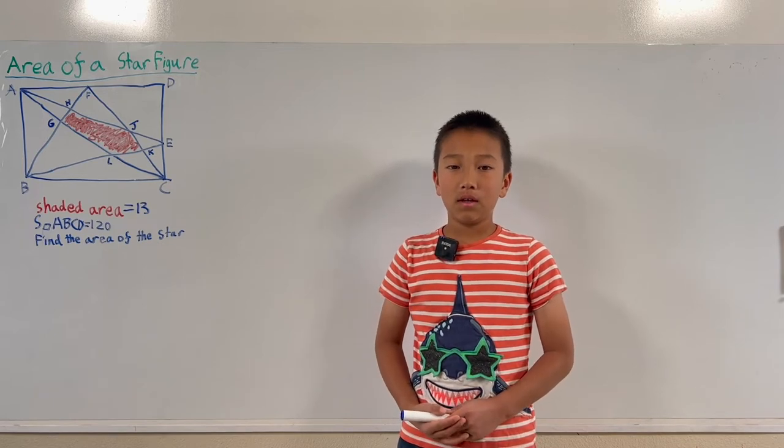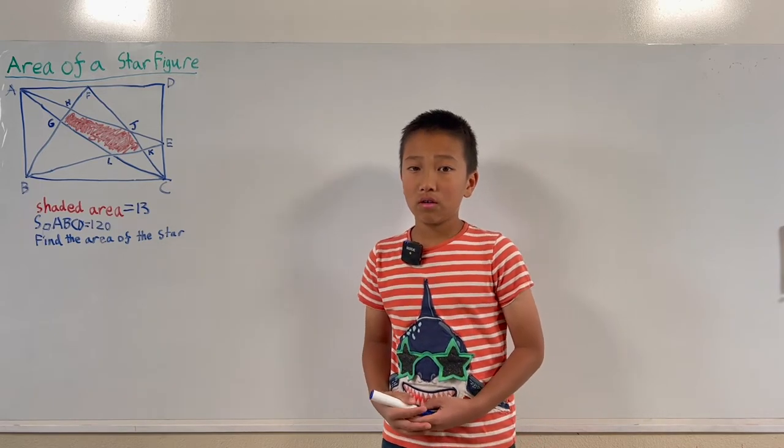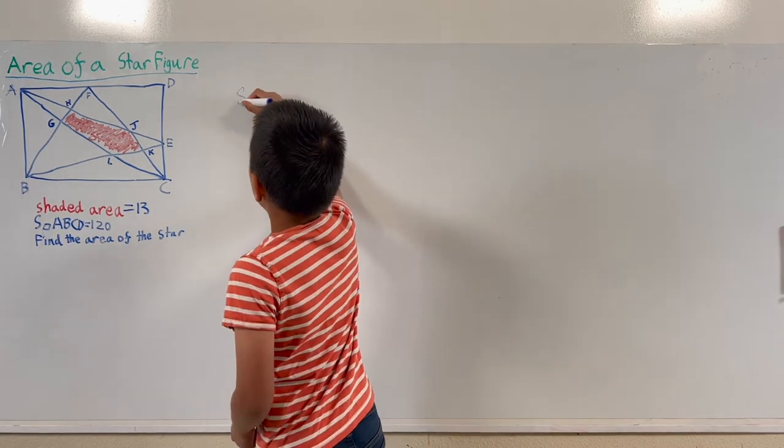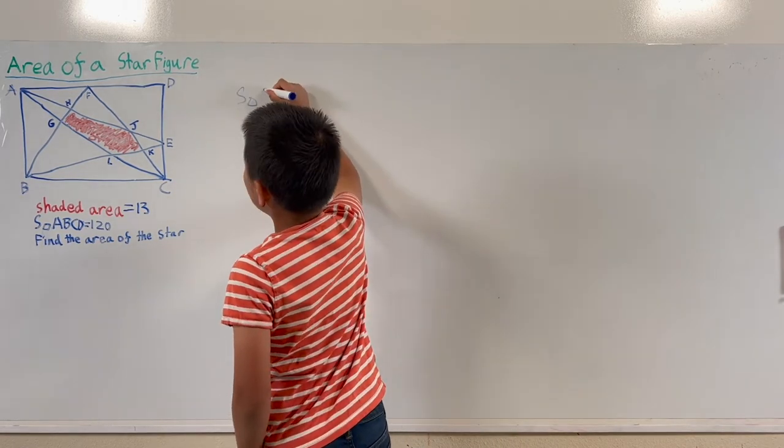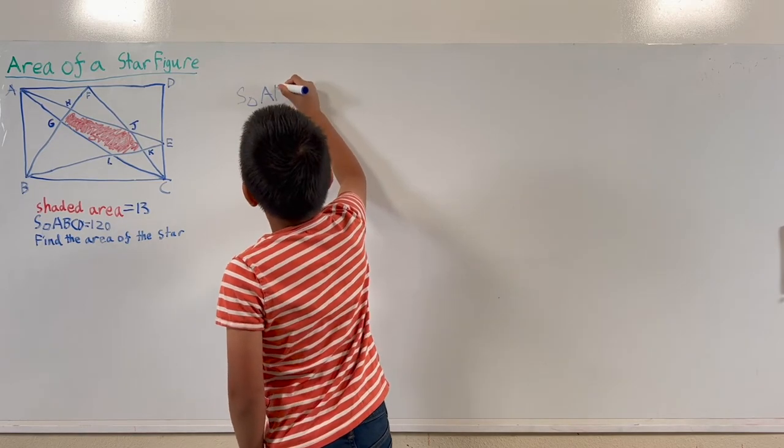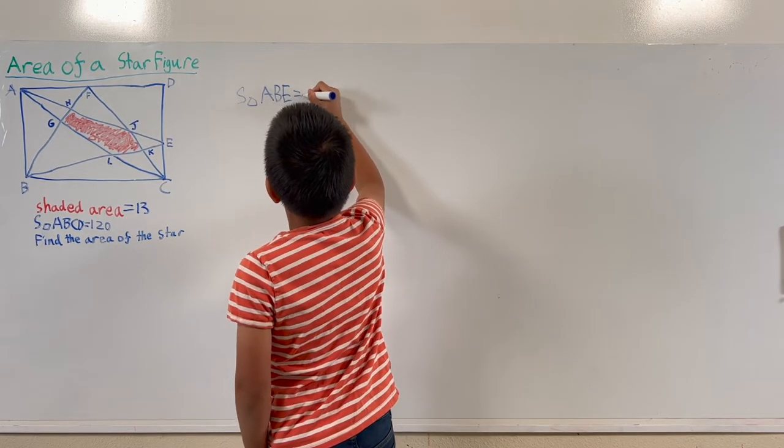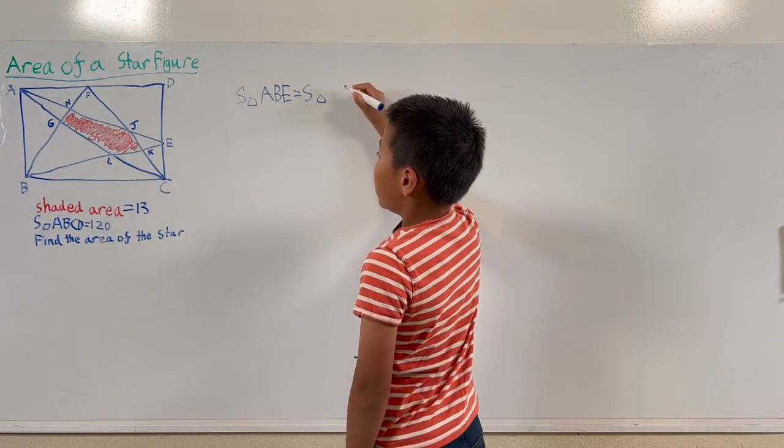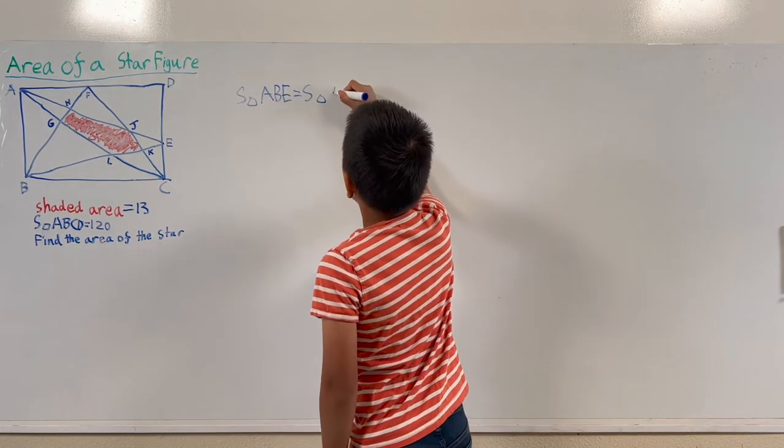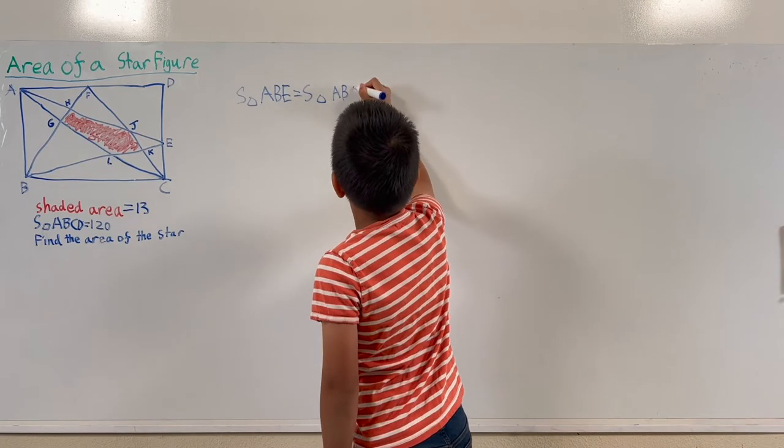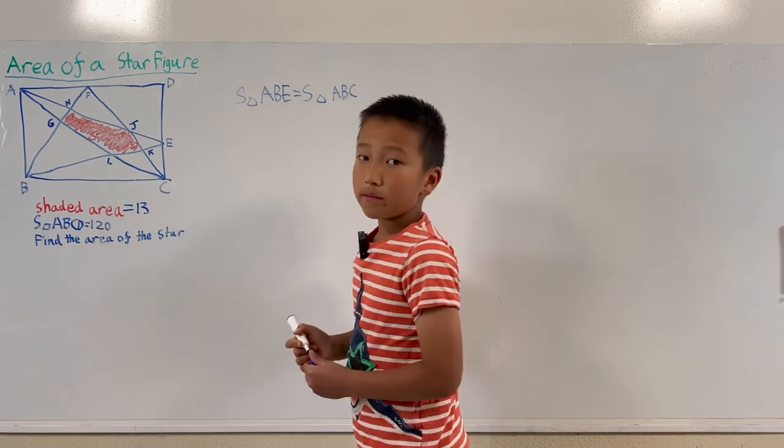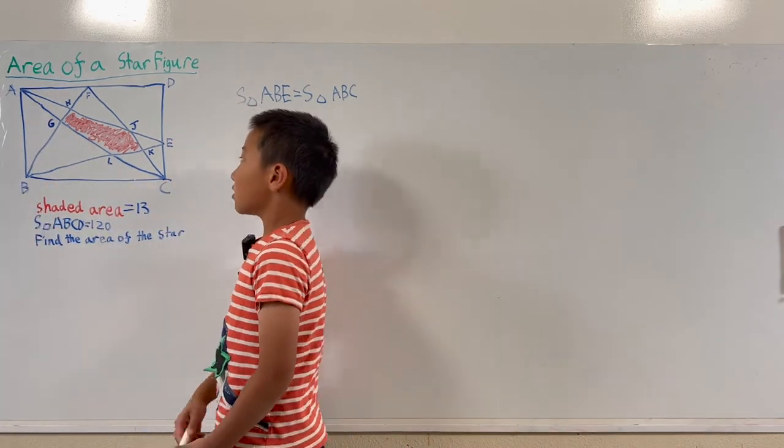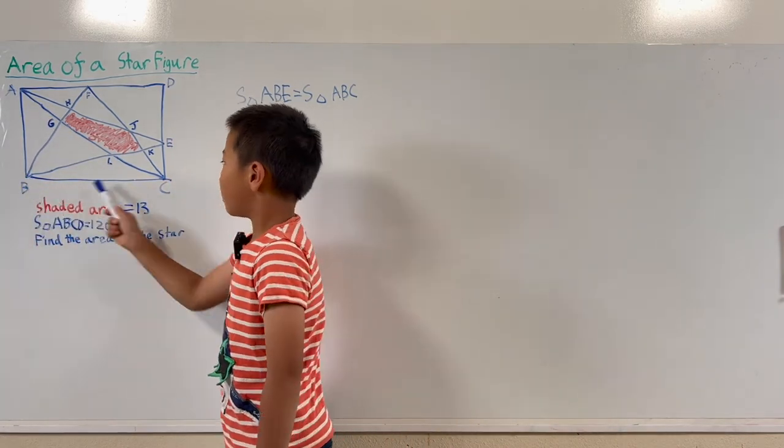My way involves a lot of equal triangle areas. So first we know that the area of triangle ABE equals the area of triangle ABC. That's because they both have the same base and they both have the same height which is BC.